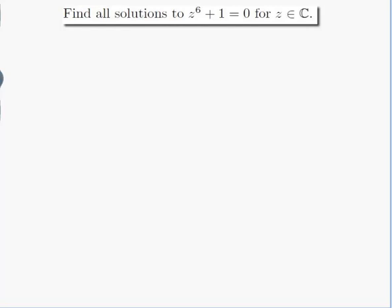The question is find all solutions to z to the power of 6 plus 1 equals 0 for z in the complex numbers. Let's write down that equation: z to the power of 6 plus 1 equals 0. Well, z to the power of 6 equals minus 1.